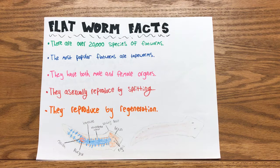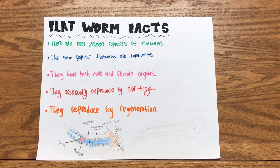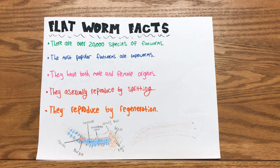Flatworm facts: There are over 20,000 species of flatworms that are living on land and in water. The most popular flatworms are tapeworms. They have male and female organs to reproduce sexually. They asexually reproduce by splitting. They also reproduce by regeneration, forming a new worm from a piece of itself.